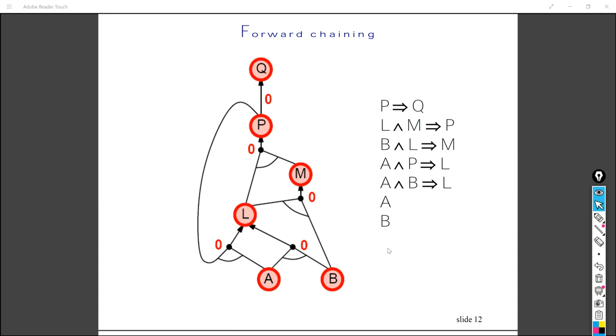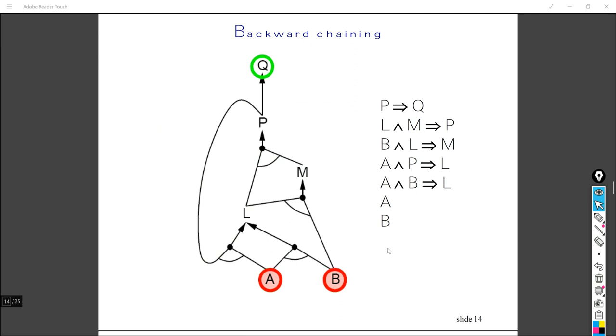So backward chaining is much faster, as it doesn't need to prove everything. It's just, I want to prove this, and I need to know something, whether that's satisfied or not, to prove the target. And it's pretty straightforward. So as you can see here, here is a green circle, that is our target. So we are going to start from our target.